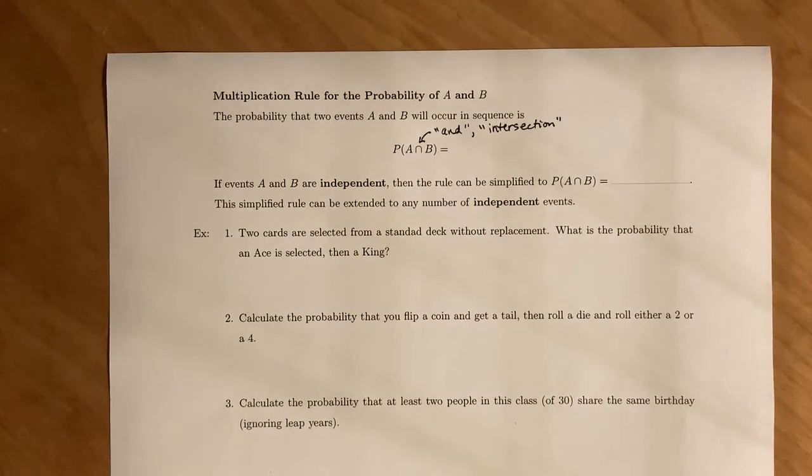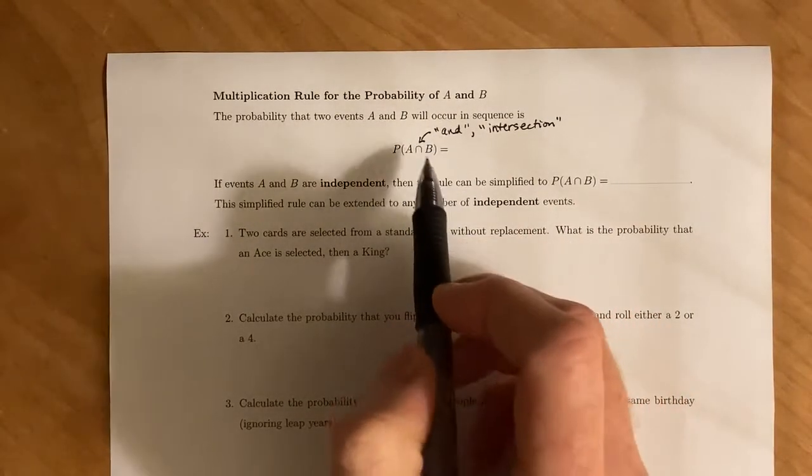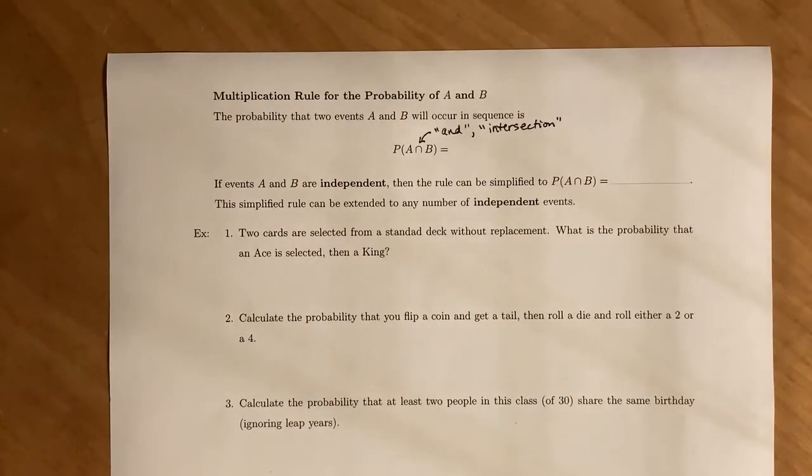The way you can remember that is if you have this symbol and you draw a horizontal line, it looks like an A, which is the first letter of AND.